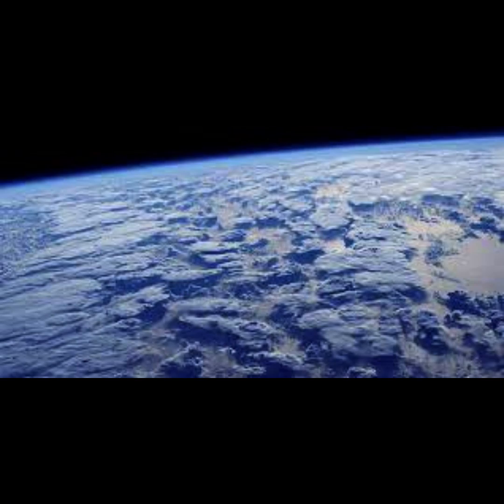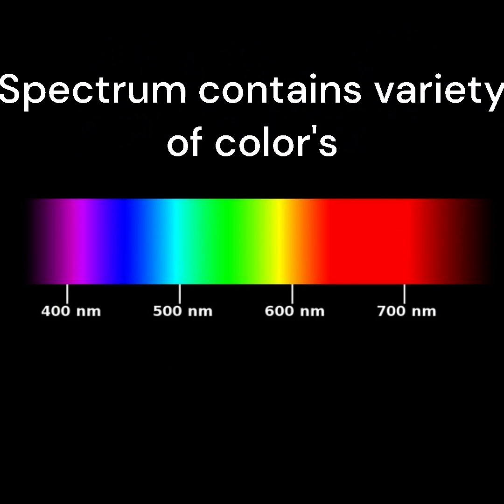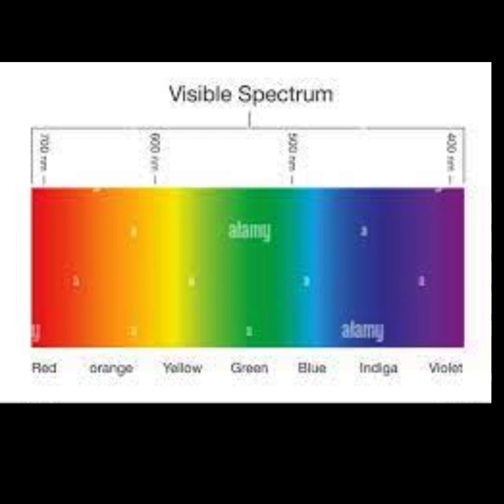The visible light spectrum contains a variety of colors ranging from red light to violet light. When all of the colors are mixed, the light appears white. But once the white light traveling from the sun reaches the earth,